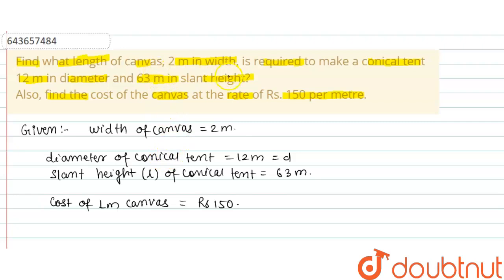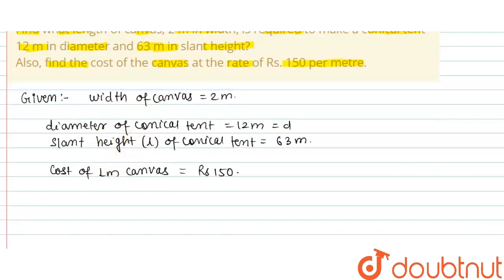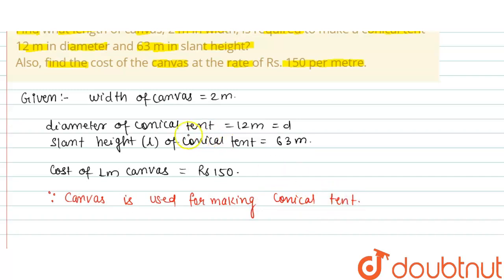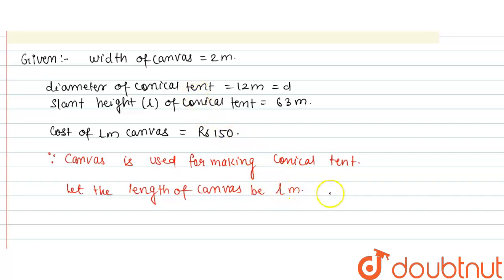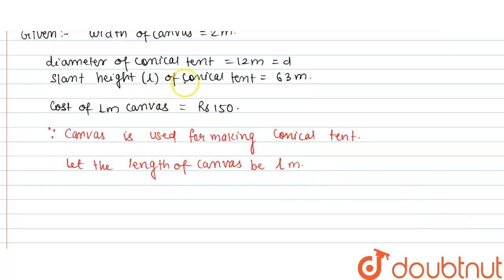The canvas used for making the conical tent means area of canvas is equal to area of conical tent. Since canvas is used for making the conical tent and we have to find the length of canvas, and width is given, let the length of canvas be L meters. The shape of canvas will be rectangular.